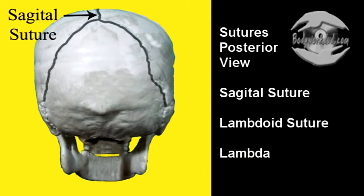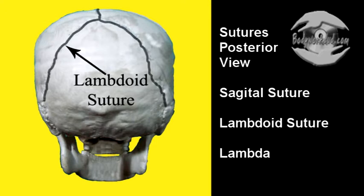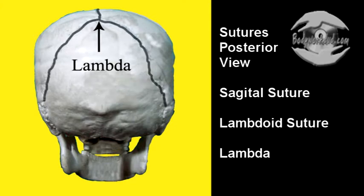Here we have the sagittal suture. The lambdoid suture. And then lambda, which is the intersection of the sagittal and lambdoid suture.